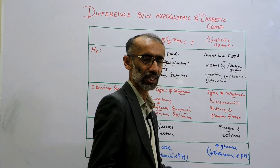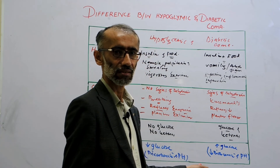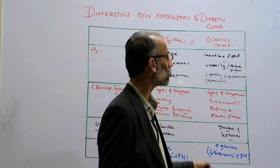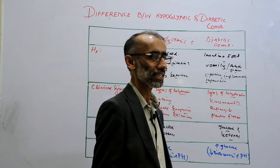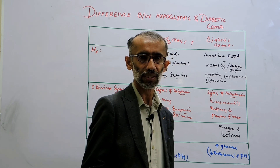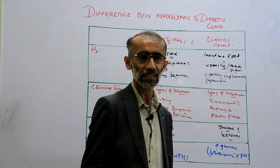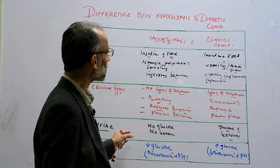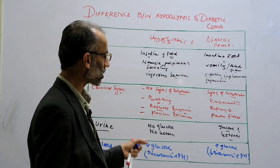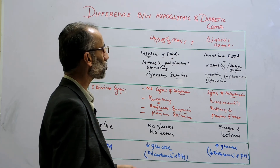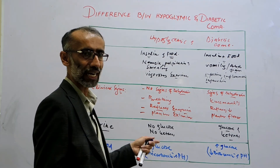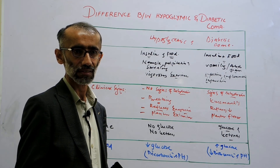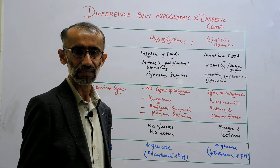These are the differential points between hypoglycemic and diabetic coma. Is it clear?